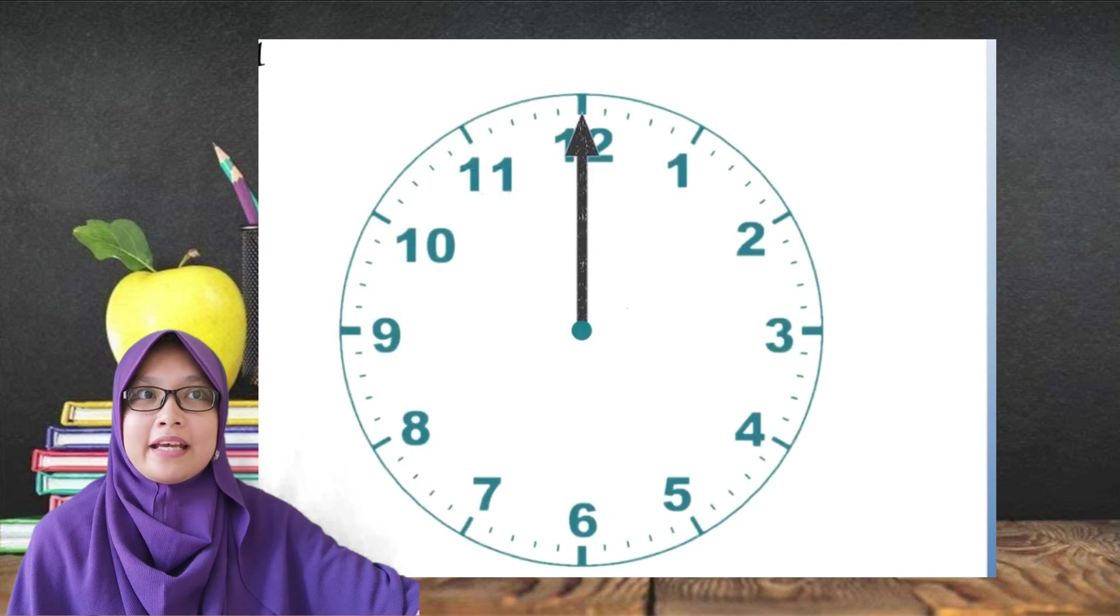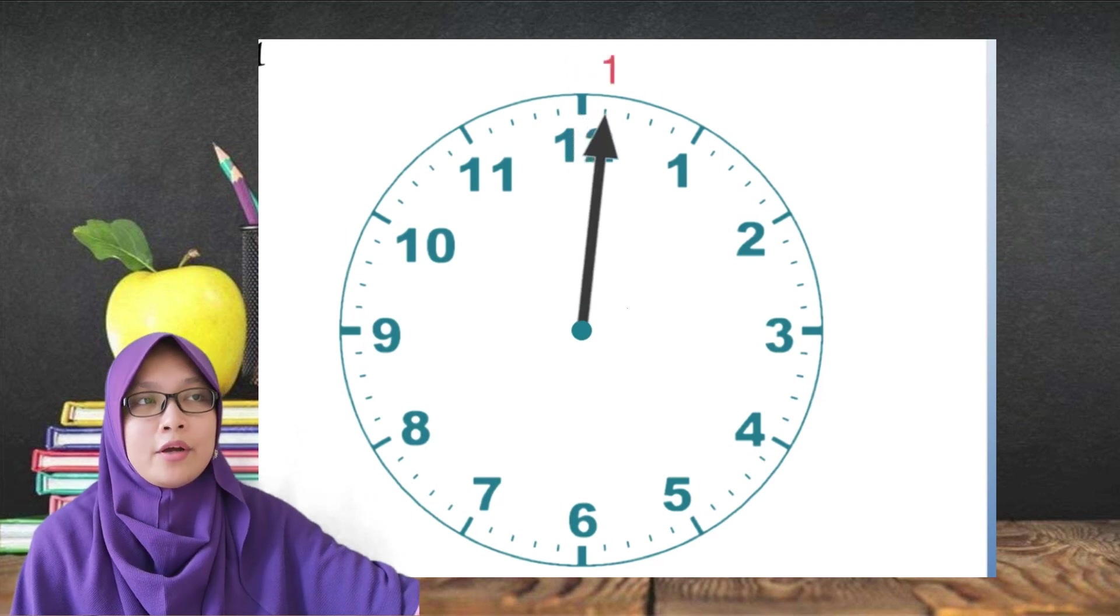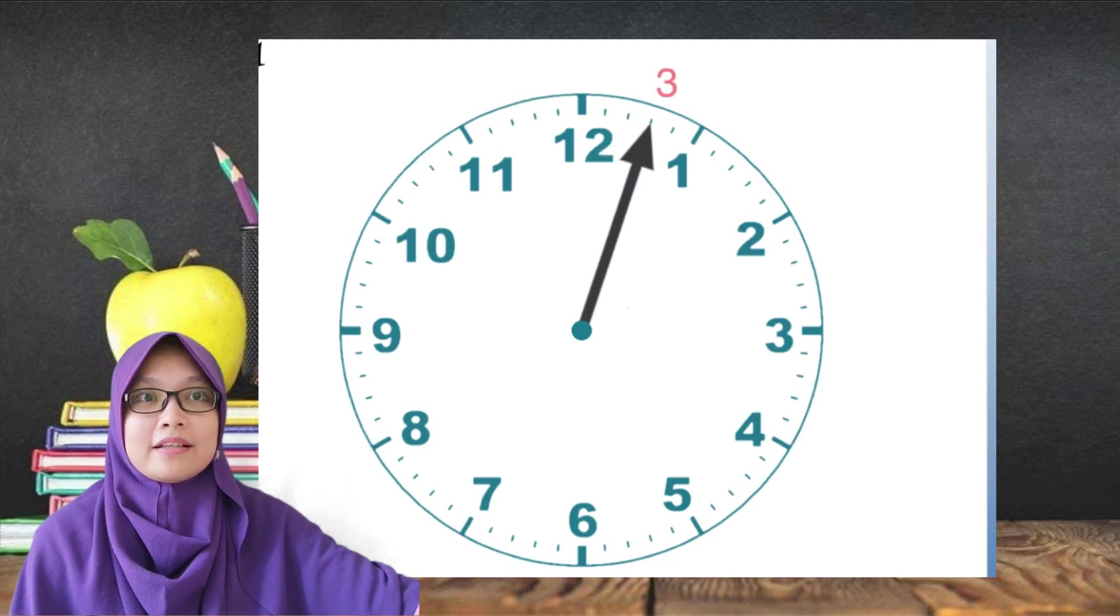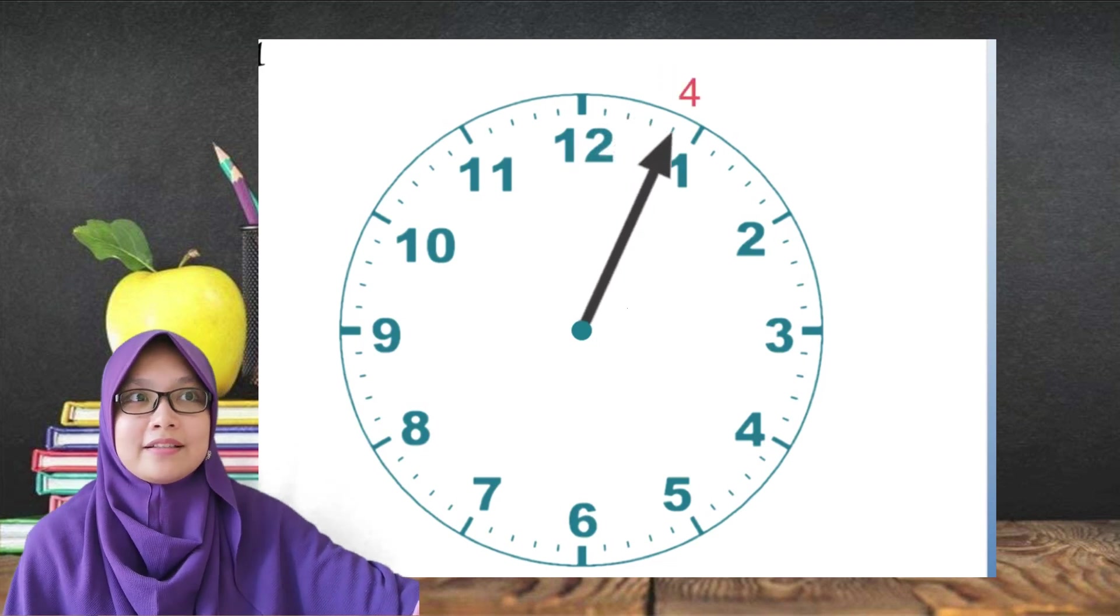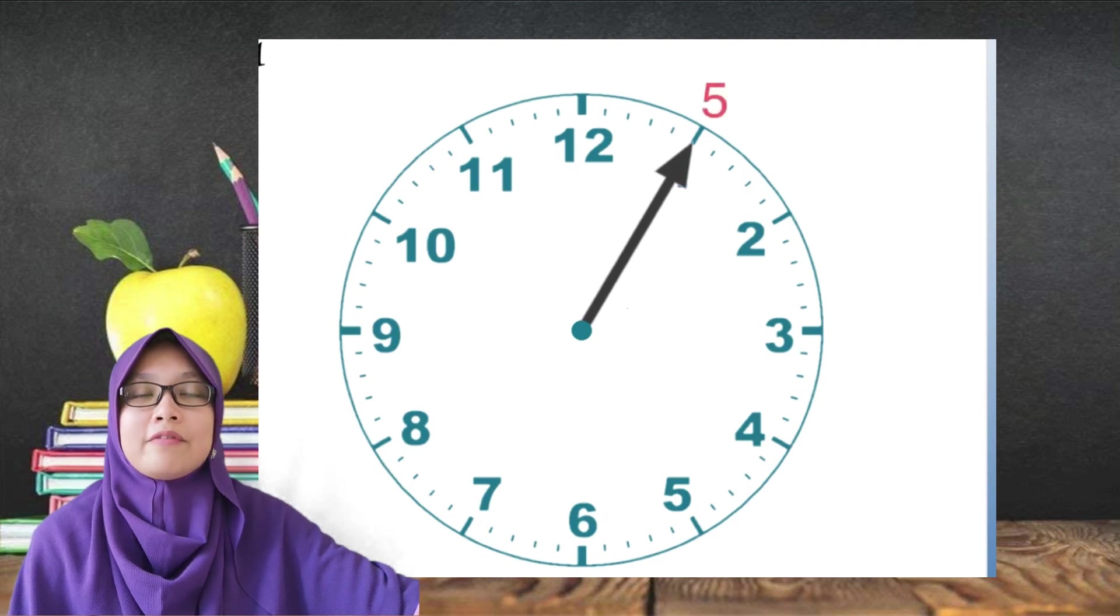The minute hand tells us how many minutes has passed. Starting from 12, it is 0 minutes has passed. Each small increment is 1 minute. So, at this point, 1 minute has passed. So, 2 minutes has passed. 3 minutes, 4 minutes and 5 minutes. So, each number on the clock is 5 minutes.